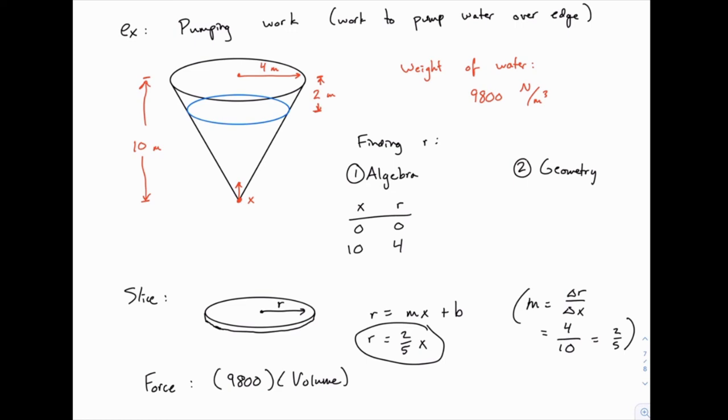That's the algebraic approach, and some of you may find that to be easiest, just to think about how to find this relationship between the radius and the position of the slice. The geometric approach uses similar triangles. We've talked about these before.